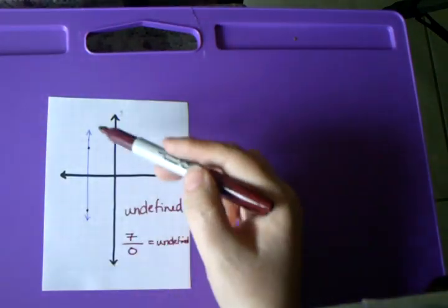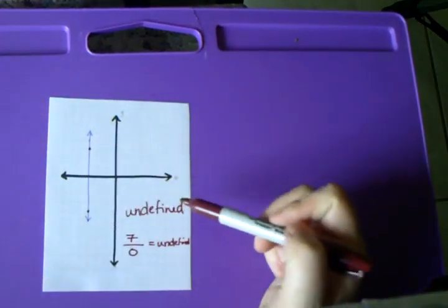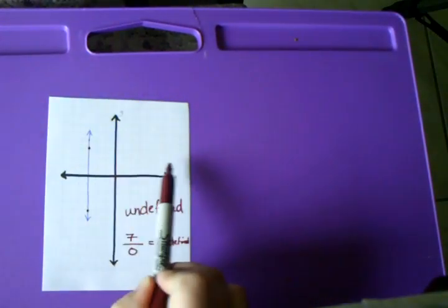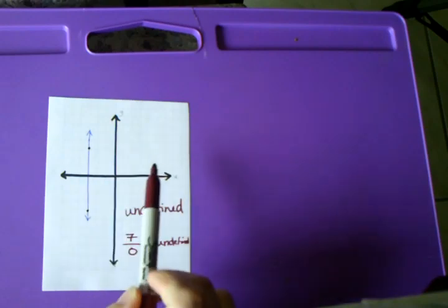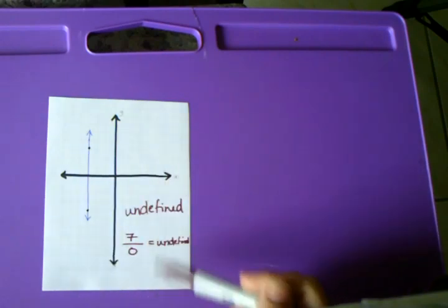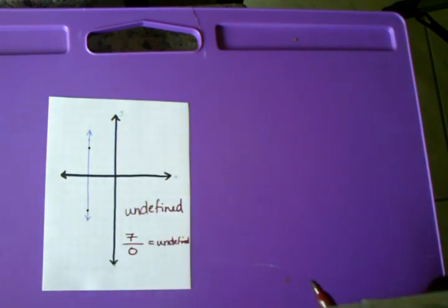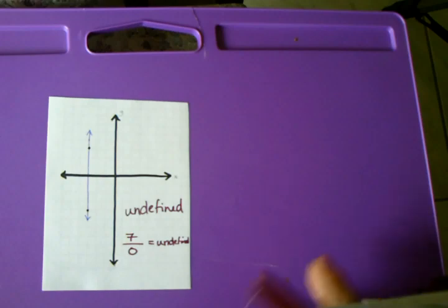So straight up and down is undefined, and side to side flat is zero. That is the difference between those two special slopes, and that is how you calculate the slope by looking at a graph of a line.